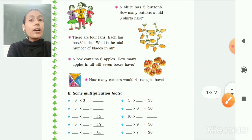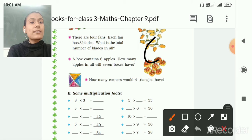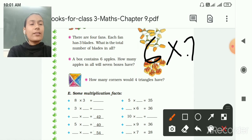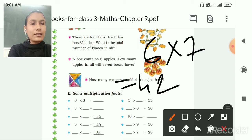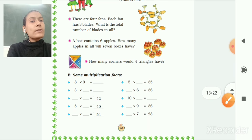Then a box contains 6 apples. How many apples in all will 7 boxes? So 6 multiply by 7, 6 7s are 42. So 42 apples. Then how many corners would 4 triangles have? This is your homework. You have to practice at your home.